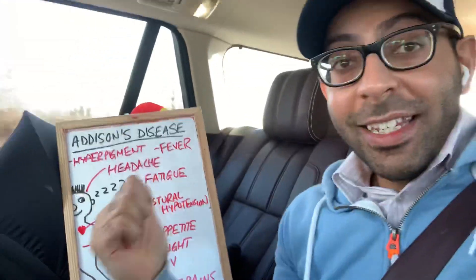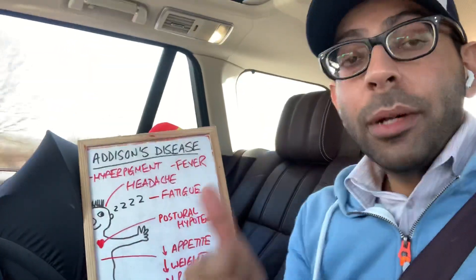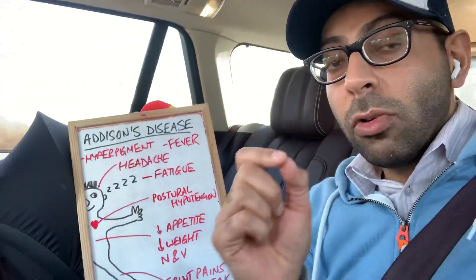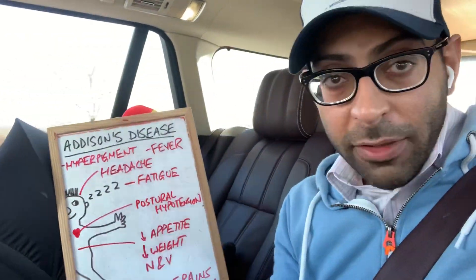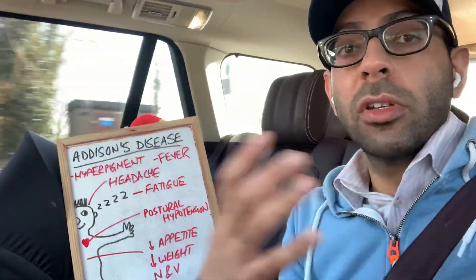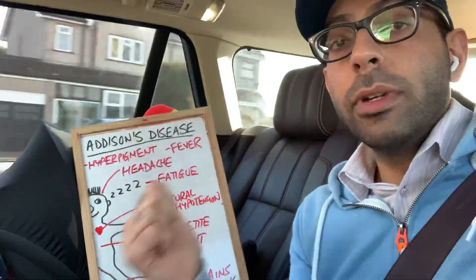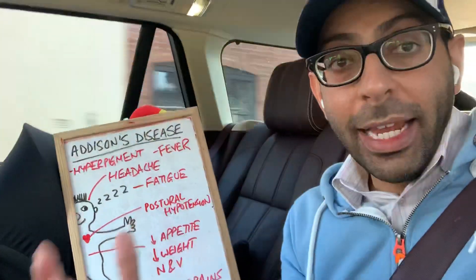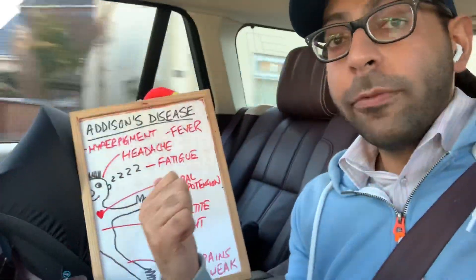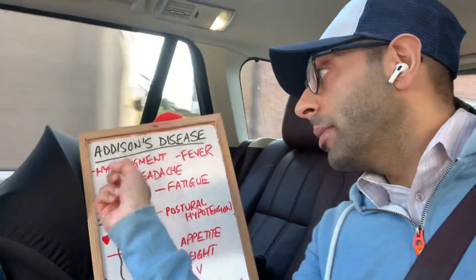So, Addison's disease — why does it happen? Primary adrenal insufficiency. Why? Because the adrenal cortex has been damaged or destroyed, for example due to autoimmune problems. There are a few other reasons and we'll talk about that in another video. It has a nonspecific presentation and is often diagnosed quite late, but look out for collections of features in medical exams.